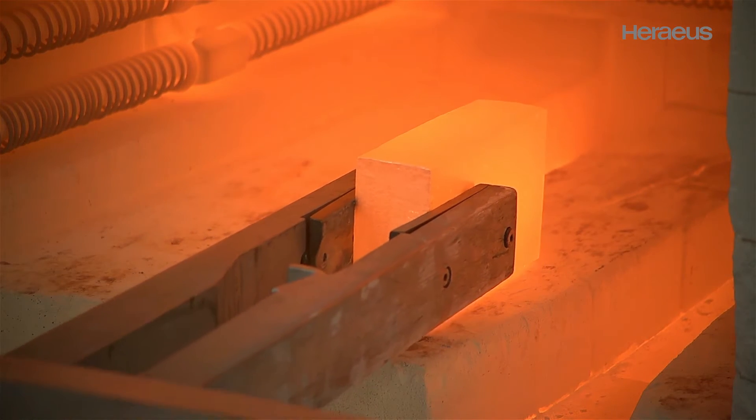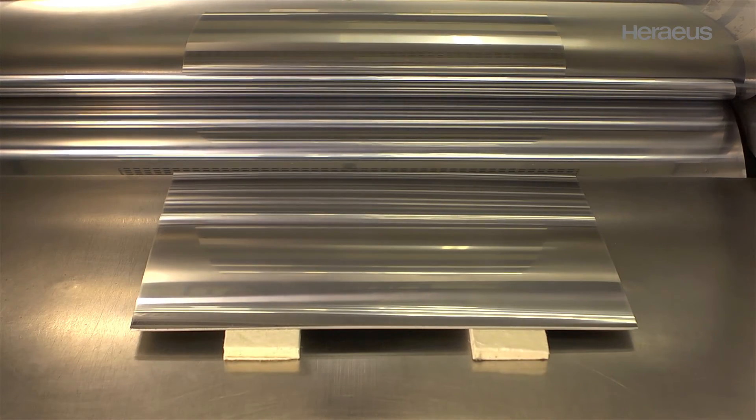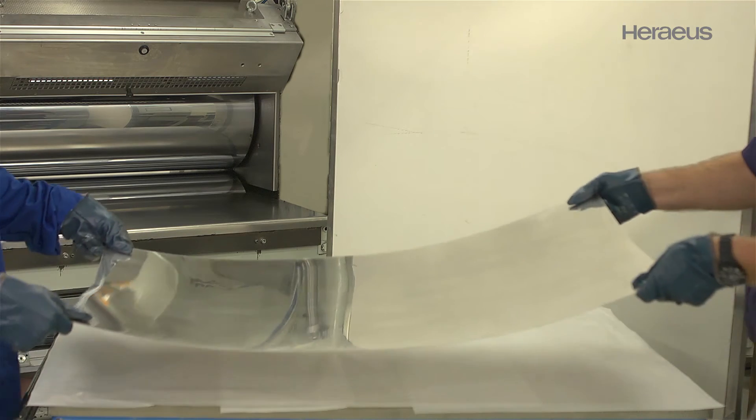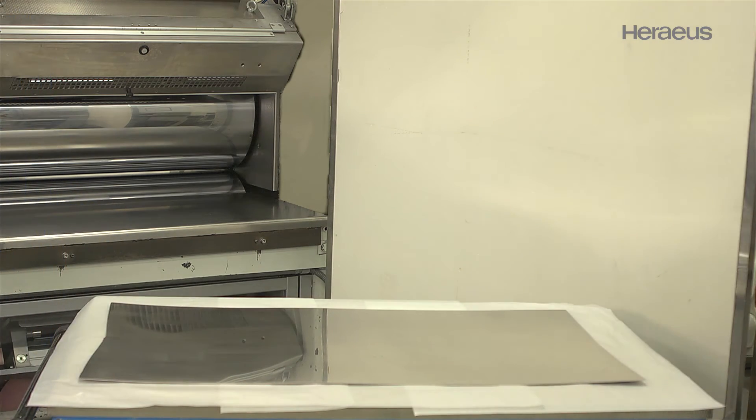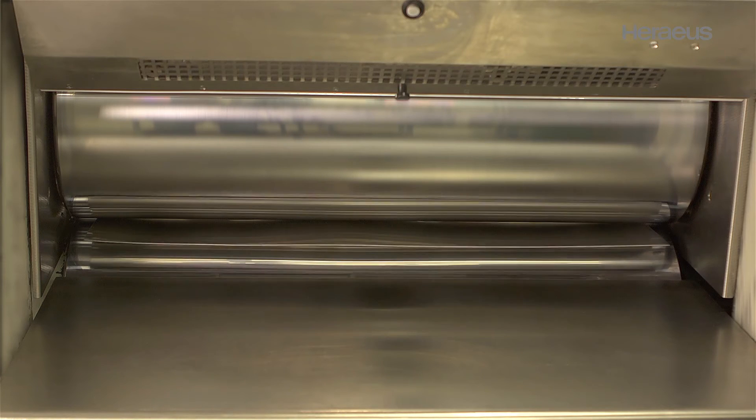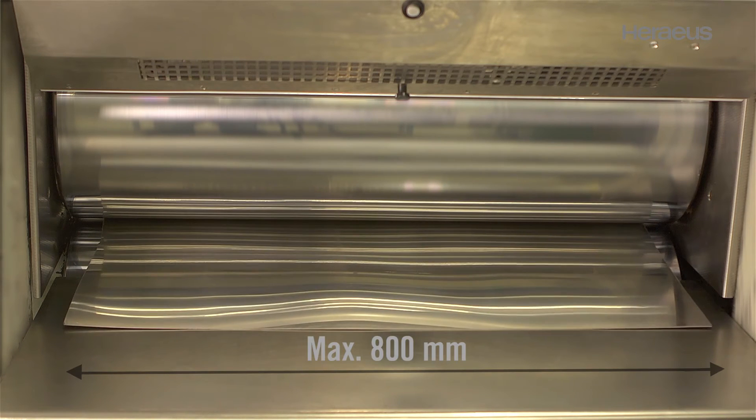Alternatively, depending on the component to be made, the bars can be rolled into sheets with a variety of geometrical dimensions. Typical sheet thicknesses for platinum components in the glass industry lie between 0.5 mm and 3.5 mm. The sheet can be rolled to a maximum width of 800 mm.